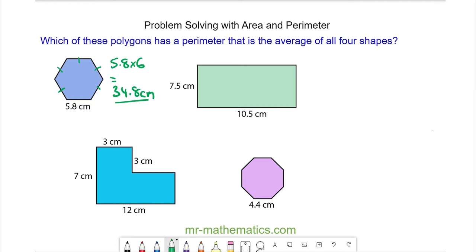For the rectangle, we have 7.5 on the left side, again on the right side, so in total we have 15 centimeters, plus the 10.5 on the bottom and the top, which is going to be another 21 centimeters. So in total, the perimeter of the rectangle is 36 centimeters.